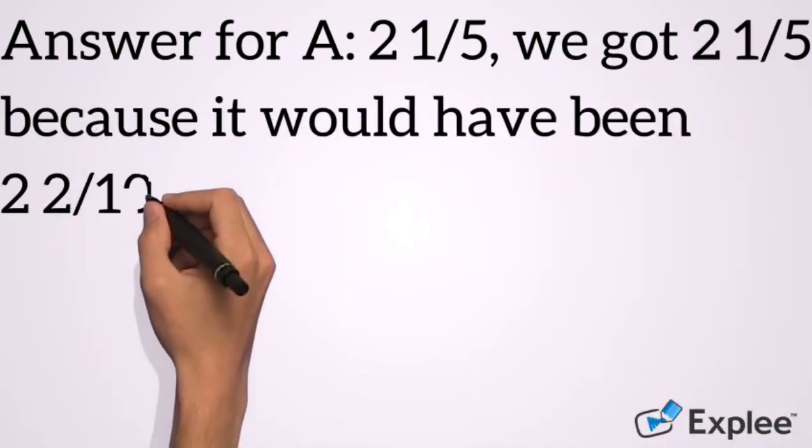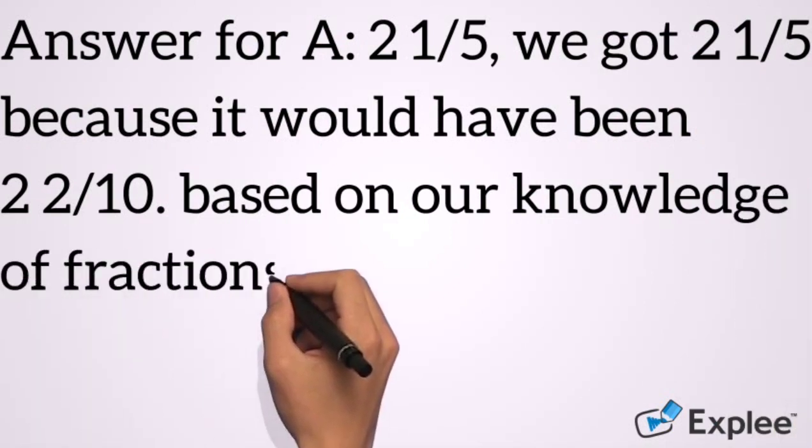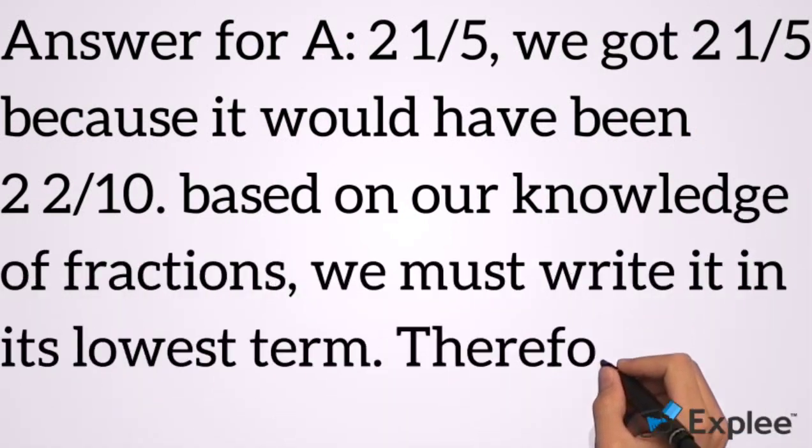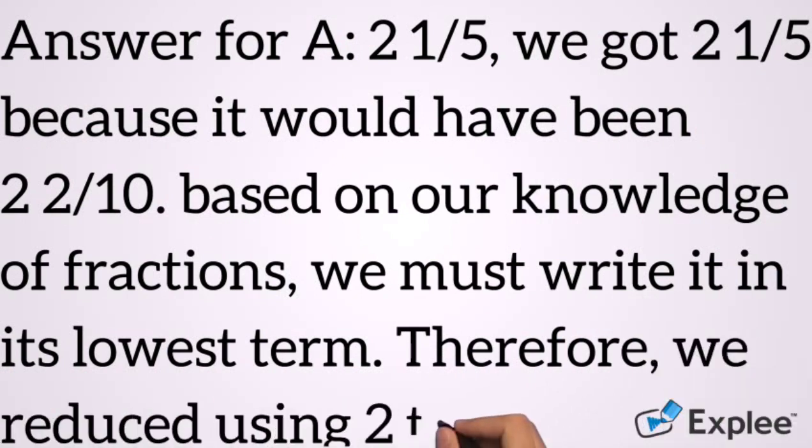The answer for A would be two and one fifth. How we got two and one fifth is because we had two and two tenths. Based on our knowledge of fractions, we must write the fraction in its lowest term. Therefore we reduce using two to get two and one fifth.